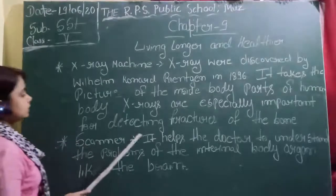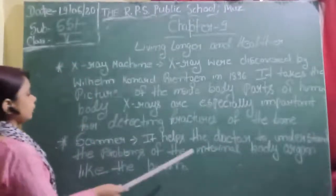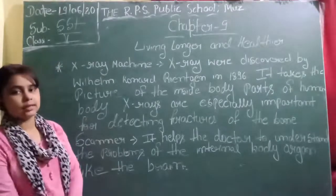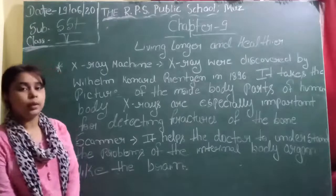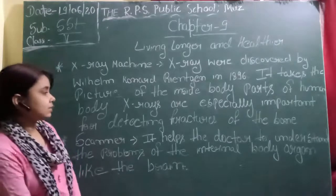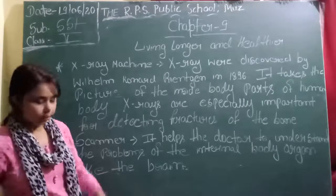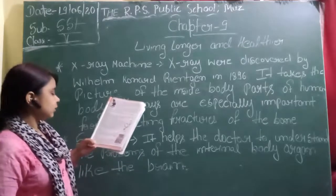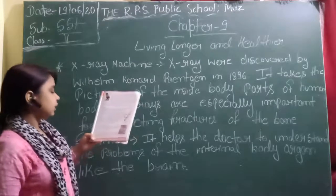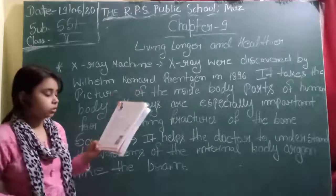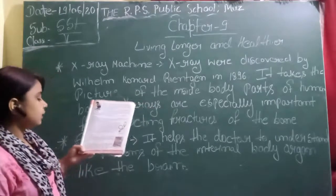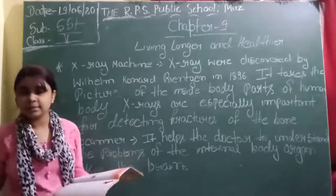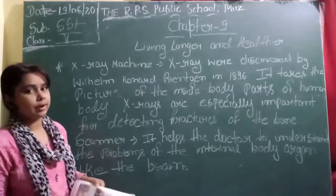Next is the scanner. A scanner can help the doctor to understand the problem of the internal organs like the brain. If there is an internal injury in the brain, the scanner can figure it out. Sophisticated machines like CAT scan, Ultrasound, and MRI help doctors get a complete picture of internal organs. These are used to treat diseases without cutting open the affected body part.